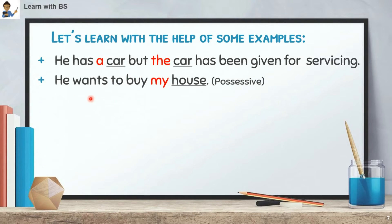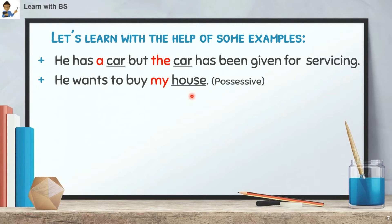Example 2: 'He wants to buy my house.' Here, 'house' is the noun. The word that comes before the noun is 'my'. My shows possession, so 'my' is a determiner. What type of determiner? It is a Possessive determiner.